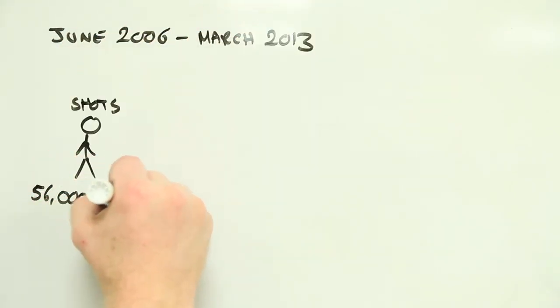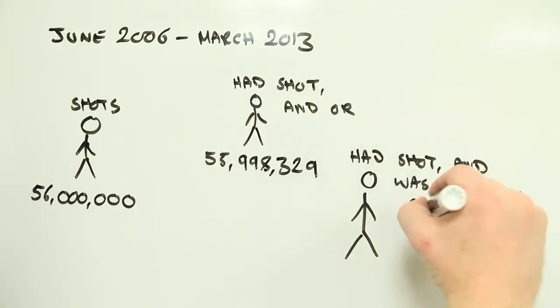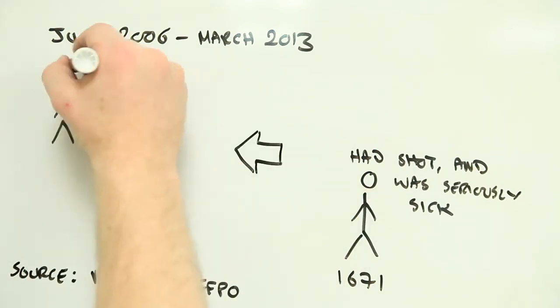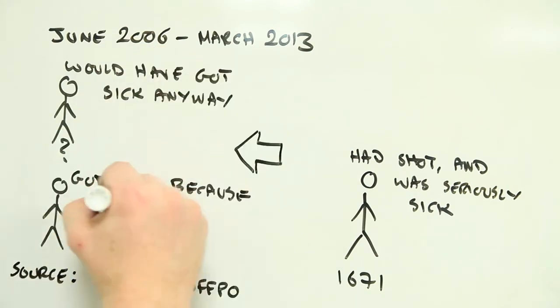But, and this is a big but, because of the way these health impacts are reported, there's no way of telling whether people have got sick because of the vaccine or because of something else that just happened to occur around the same time. And so the chances are that the likely rates of vaccine-related complications are even lower than the statistics might suggest.